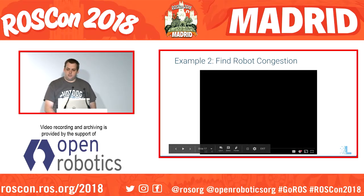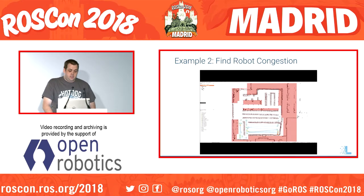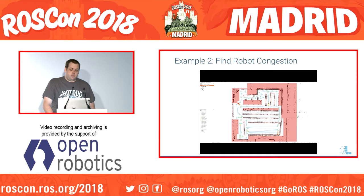I can use the same symbology configuration on real-time data. The video is sped up but I was watching this in real-time as a robot navigated to a number of locations. It would be just as simple to subscribe to the position of many robots and watch them all in real-time as well.